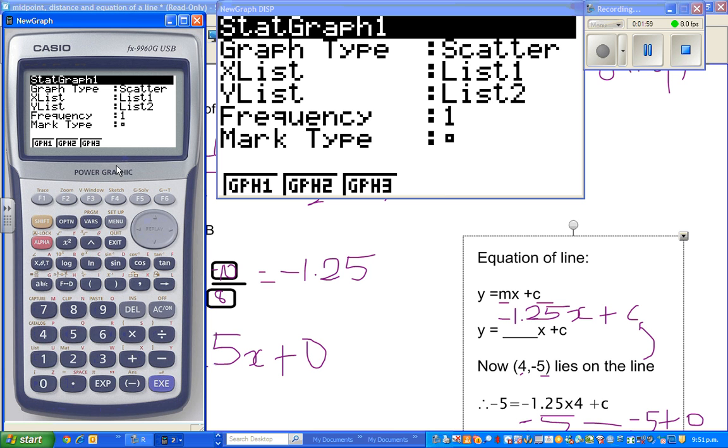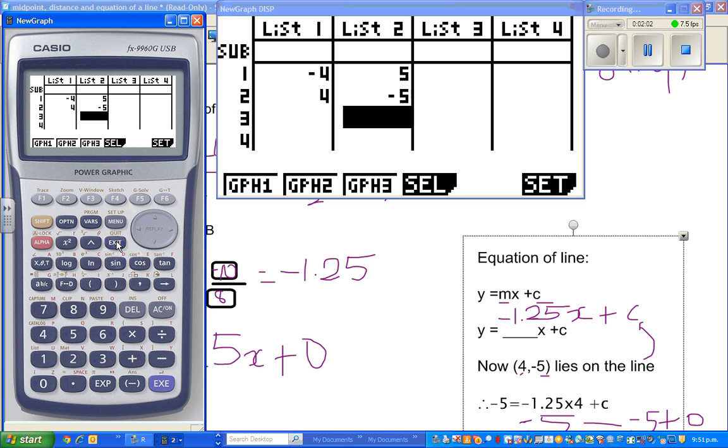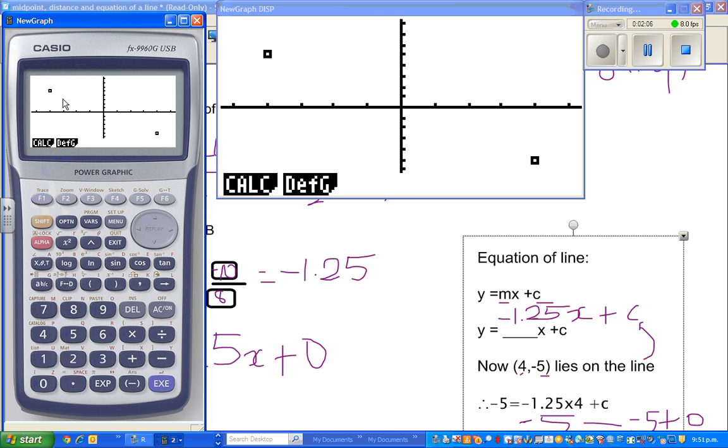It will plot these two points. We are asking the calculator to plot the points. These are the two points. This is your negative 4, 5, and this is your 4, negative 5.